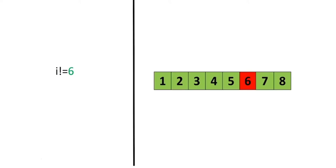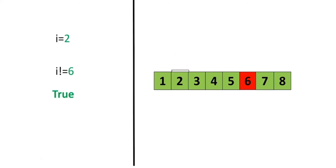The inequality test uses an exclamation mark preceding the equal sign. If two operands are not equal, then the condition becomes true. We can use a number line — when the condition is true, the corresponding numbers are marked in green, and red for where the condition is false. If we set i equal to 2, the operator is true, as 2 is not equal to 6.